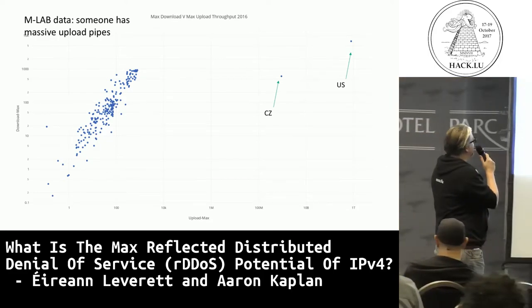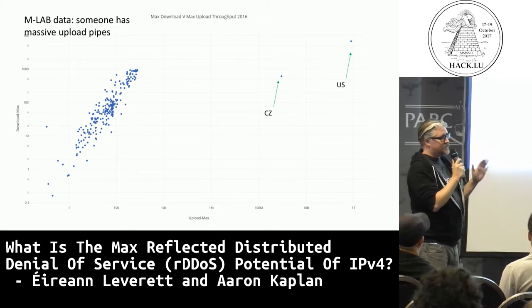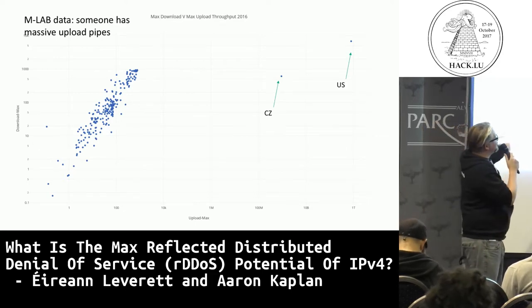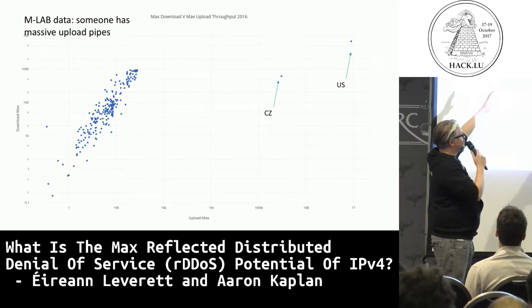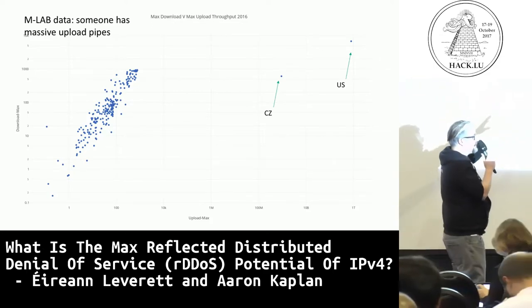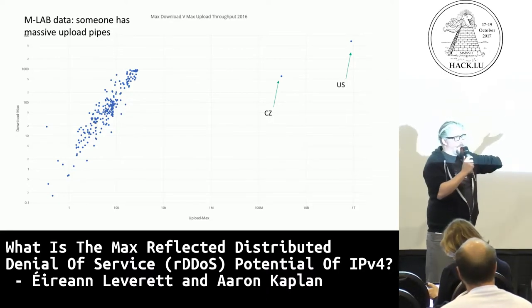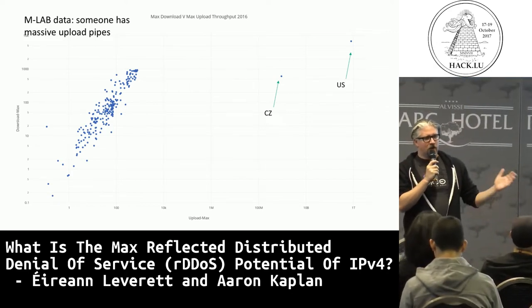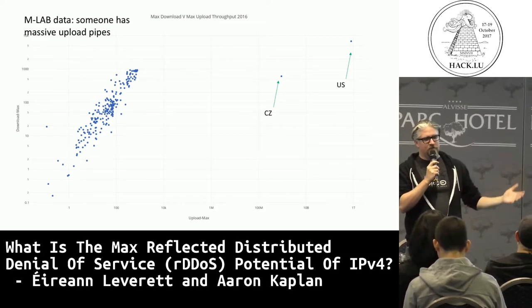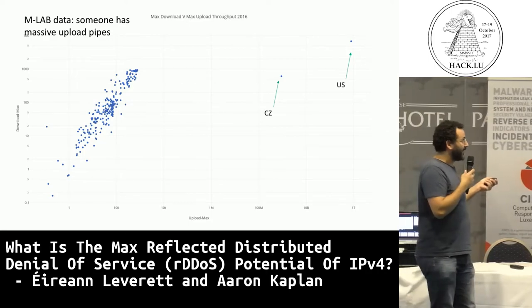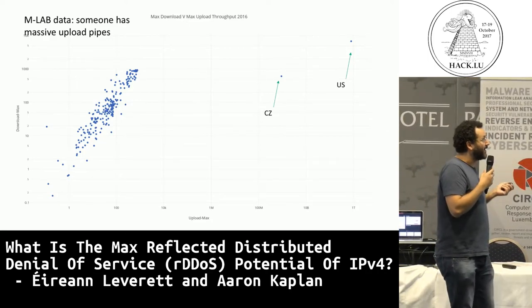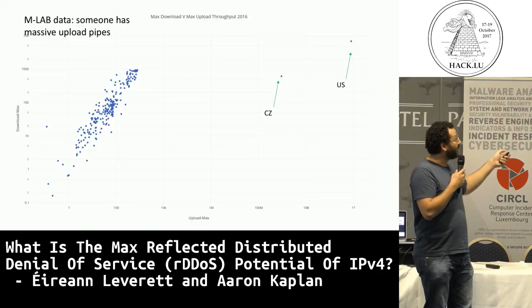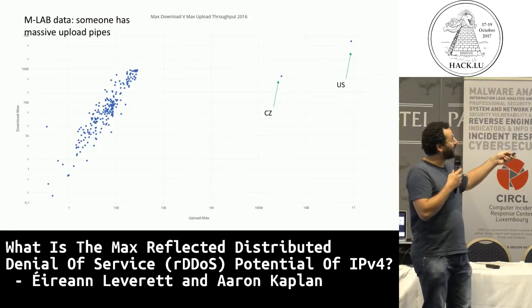This graph shows max throughput - download max versus upload max. Most countries cluster together, and if you do median you get a nice line. Then you have two crazy outlier countries: the US and Czech Republic, apparently with massive upload pipes. This is a nice example of why we have to be very careful about our reference data - always go back and ask if that was correct, and test with a second approach.